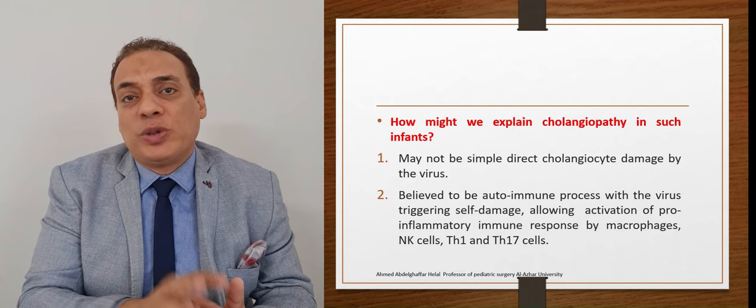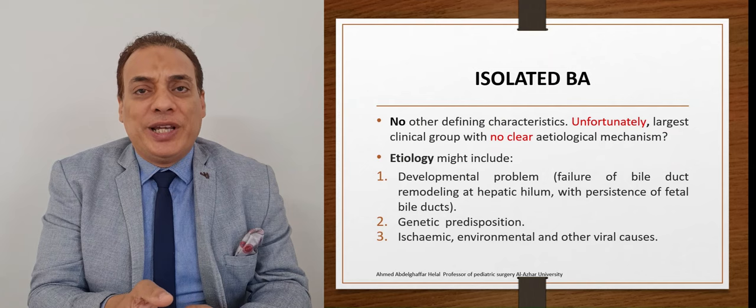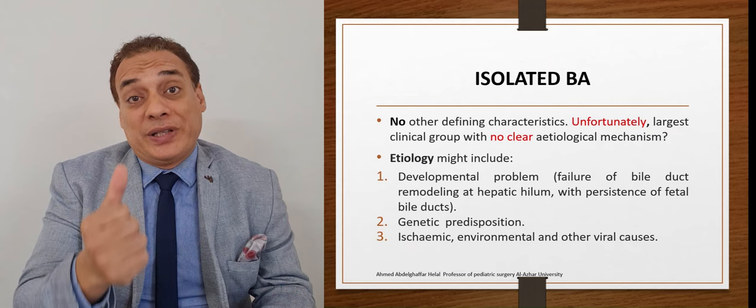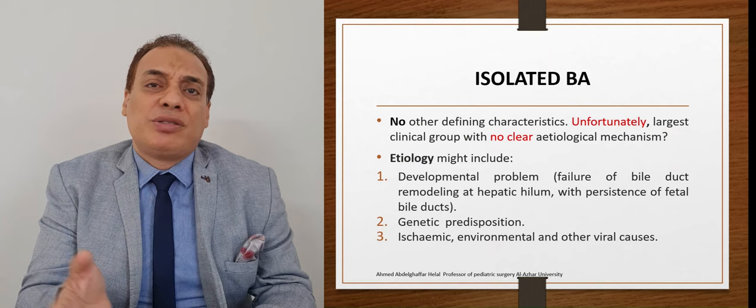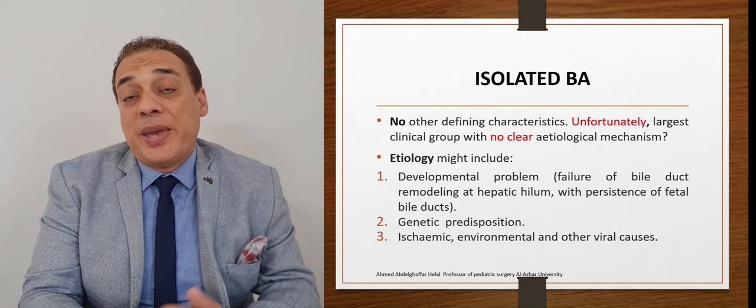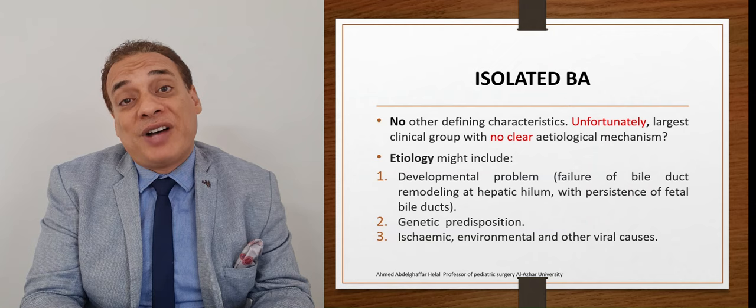The pathology in biliary atresia is a fibro-inflammatory disease affecting both intra- and extra-hepatic bile duct. It is unclear whether the pathology starts with damage to the extra-hepatic bile duct and the intra-hepatic involvement is secondary, or whether it is an autoimmune disease from the start affecting both systems. Isolated biliary atresia is the largest clinical group, accounting for about 80% of cases, with no defining characteristic and no identifiable cause.